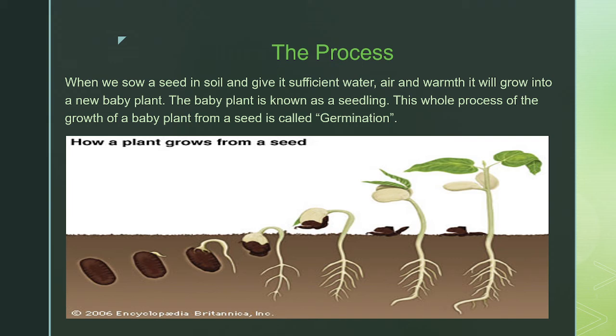The baby plant is known as a seedling. This whole process of the growth of a baby plant from seed is called germination. And in full form it is called germination of a seed.